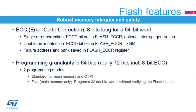The flash memory embeds an error code correction function to ensure robust memory integrity and safety. The ECC is 8 bits long for a 64-bit word. In the case of a single error, it is corrected. The ECCC bit is set in the flash ECC register, and an interrupt is generated if it is enabled. In the case of a double error, it is detected but not corrected. The ECCD bit is set in the flash ECC register, and a non-maskable interrupt is generated. When an ECC error is detected, the failure address and associated bank are saved in the flash ECC register.